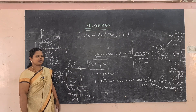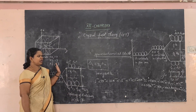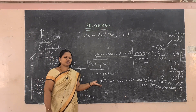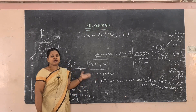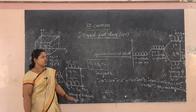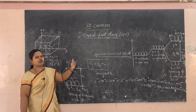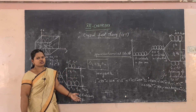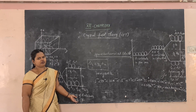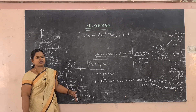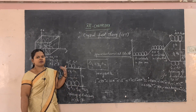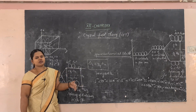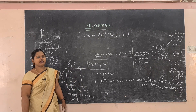Crystal Field Theory mainly deals with the spectrochemical series. Depending on the spectrochemical series, we explain CFT. All the theories — Valence Bond Theory, Werner's Theory, Crystal Field Theory, and Molecular Orbital Theory — must be learned thoroughly.